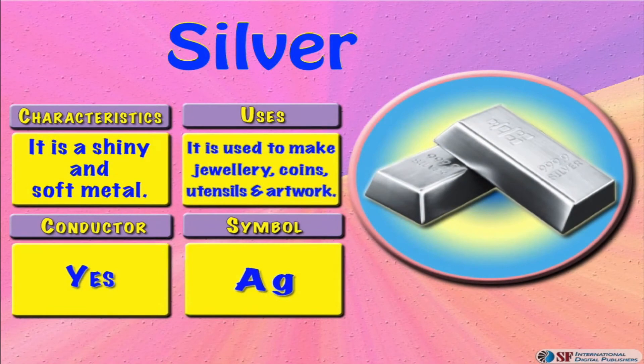Silver. It is a shiny and soft metal. It is used to make jewelry, currency coins, and utensils, and it's also used to create artwork. It's a good conductor of electricity, and it's represented by the symbol Ag.